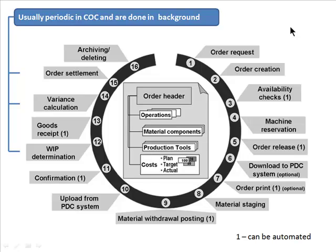With backflushing, in some manufacturing processes they keep material on the floor, and later they see how much has been consumed and automatically post a material withdrawal for that amount. For example, if you're making 20 cars and 20 cars rolled off the line, you know 80 tires have been consumed. Those 80 tires were not issued upfront, but once you record that 20 cars are completed, you post the goods issue for 80 tires retrospectively based on inferred consumption.